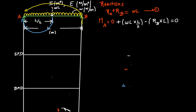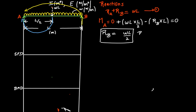This immediately gives us the value of RB. Dividing the equation by L and rearranging, we get RB equal to WL over 2. Substituting RB into equation one gives RA equal to WL over 2 as well. This is the standard procedure, but if you notice that the loading is symmetrical, you can immediately say both supports share the total load equally — so each reaction is WL over 2.